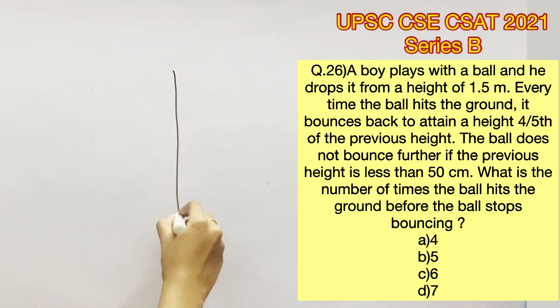So a ball is dropped from a height of 1.5 meters, which in centimeters would be 150 centimeters. It bounces back to attain a height of 4/5 of the previous height. The ball does not bounce further if the previous height is less than 50 centimeters. What is the number of times the ball hits the ground before the ball stops bouncing?